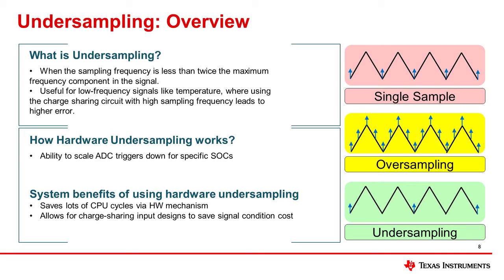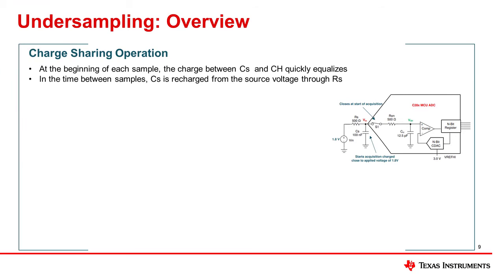For cost saving, these input networks may feature a capacitor for charge sharing rather than an active buffer or filter circuit. To match successive approximation register (SAR) ADC sample and hold, the charge sharing capacitor must be sized appropriately in proportion to the effective impedance of the voltage source. However, the time constant of the resulting RC network may exceed the minimum control loop execution period. Using undersampling, a compromise can be achieved in this scenario. In this slide, I will briefly talk about charge sharing circuits.